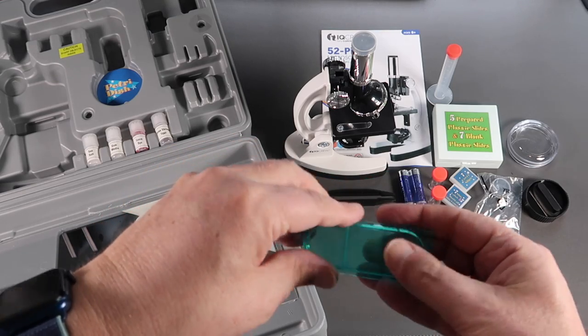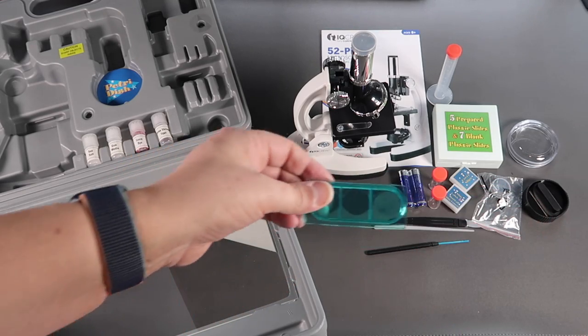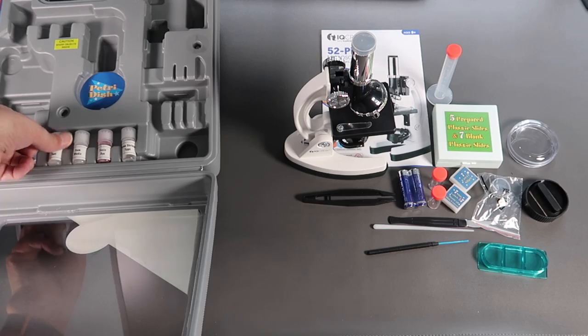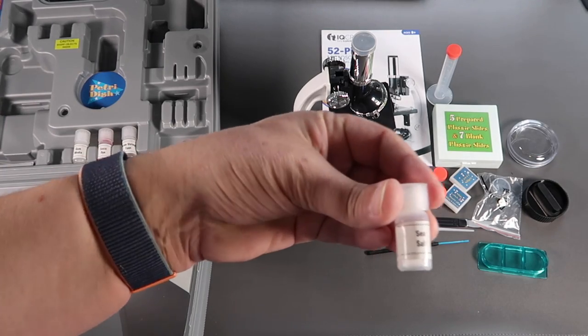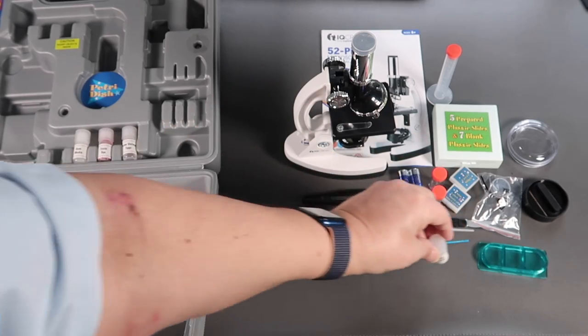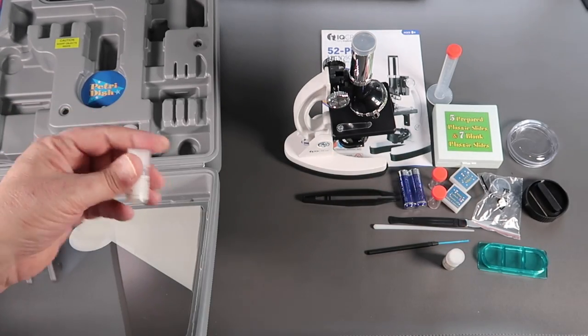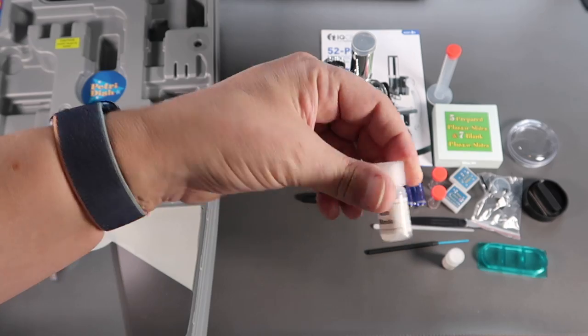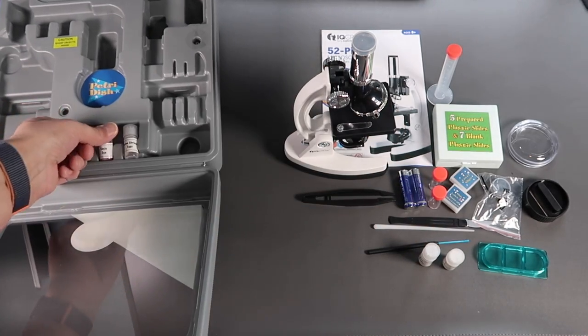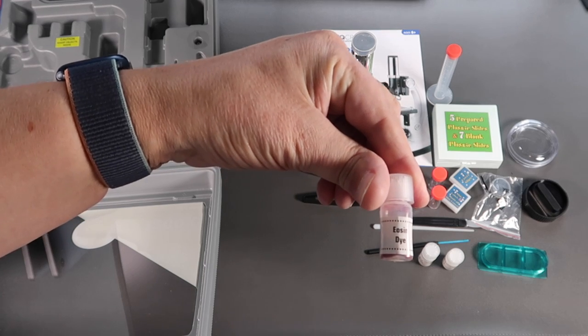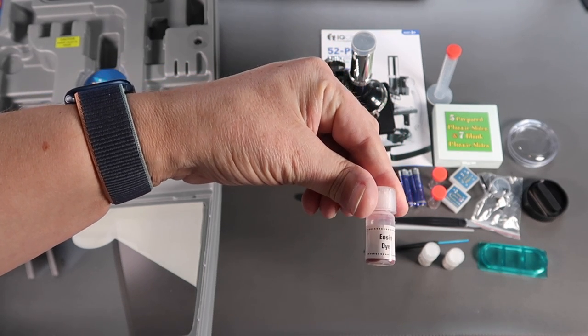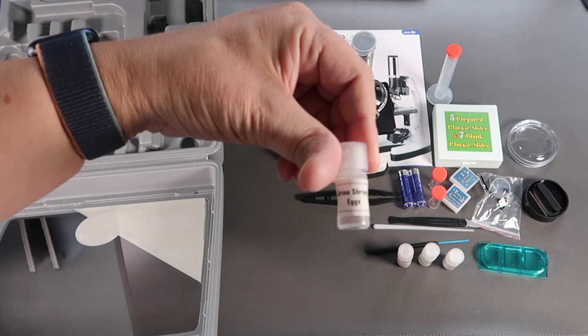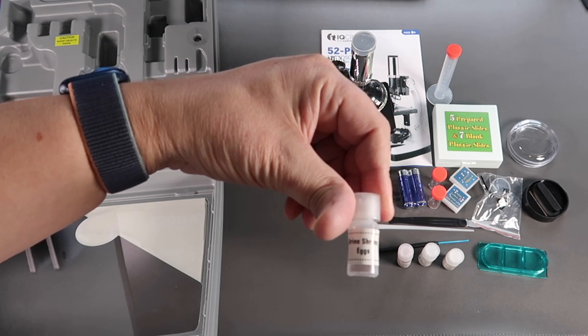This is a brine shrimp hatchery. Very interesting. And then finally we have some ingredients. Sea salt. Gum media. Eosin dye. And brine shrimp eggs for the hatchery.